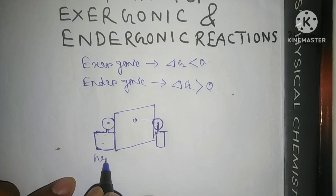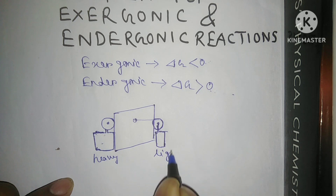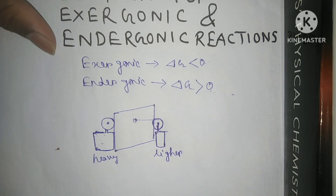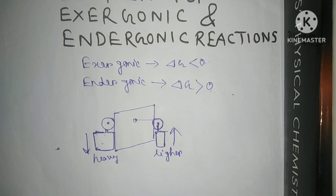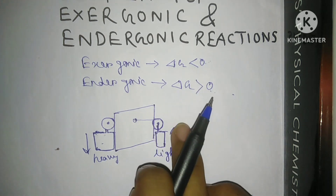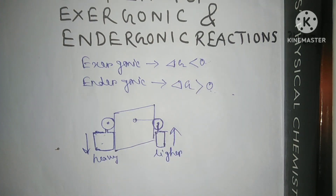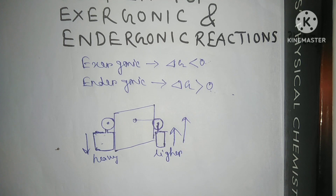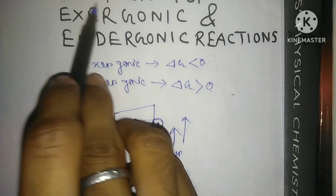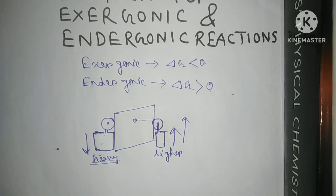Consider a pulley: this weight is heavy and this one is lighter. When the heavy weight goes down, the lighter one goes up. The lighter one won't go up by itself — that is its non-spontaneous direction. But it still goes up because of the heavier weight. The same is true for the coupling of exergonic and endergonic reactions: a highly negative Gibbs free energy value can force another reaction — the endergonic one — to proceed in its non-spontaneous direction.